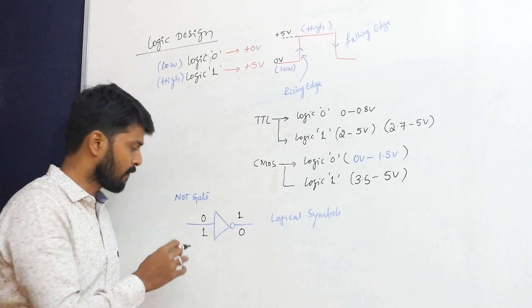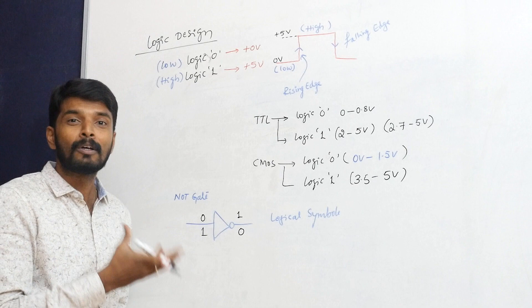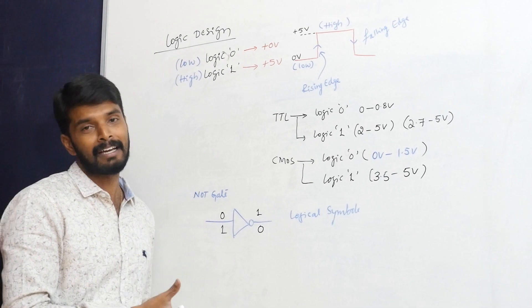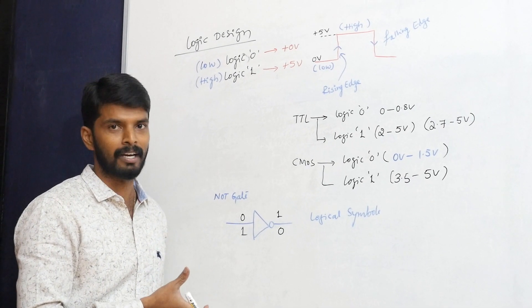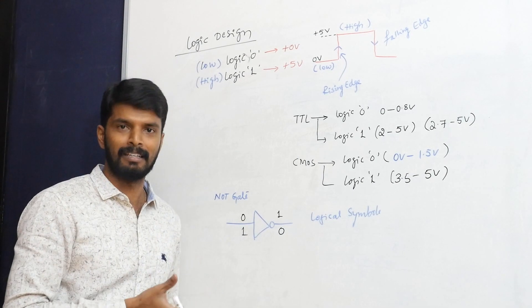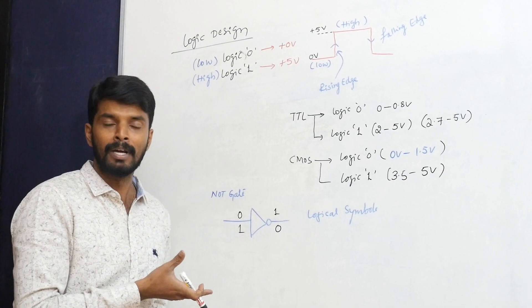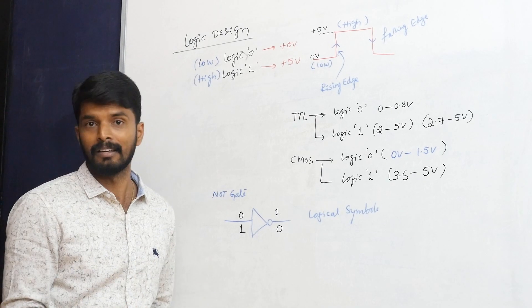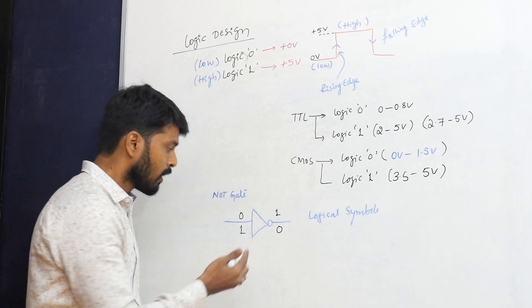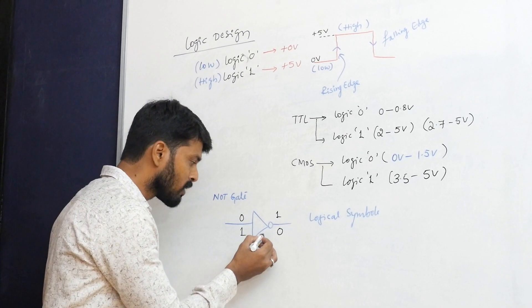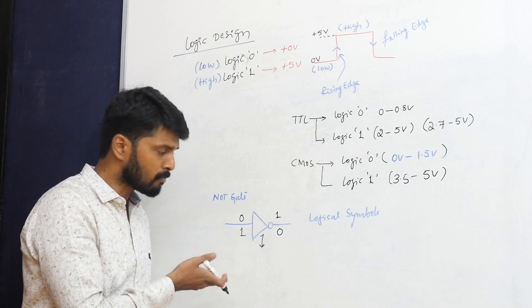This is called a logical symbol. If I give zero I get one, if I give one I get zero. That's why it is called a logic diagram. The logical symbol chosen for the NOT gate is very easy to understand — as soon as you see it, you can interpret what it does. This is called logic design.